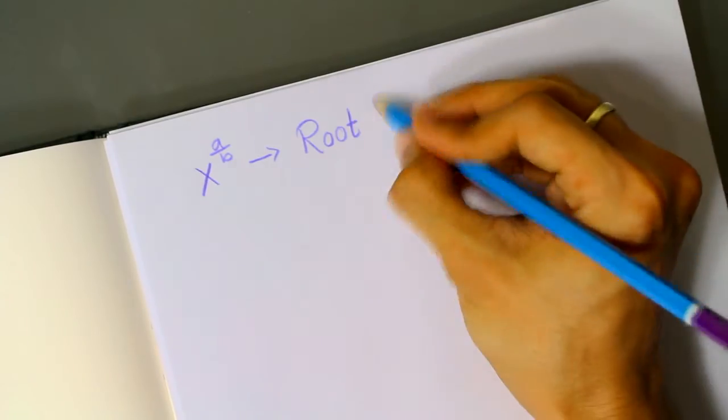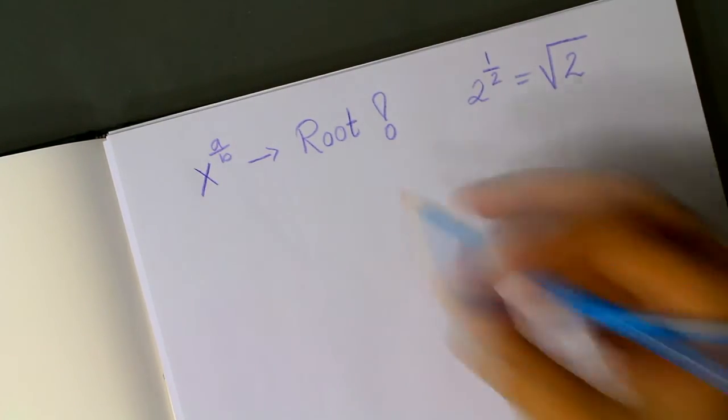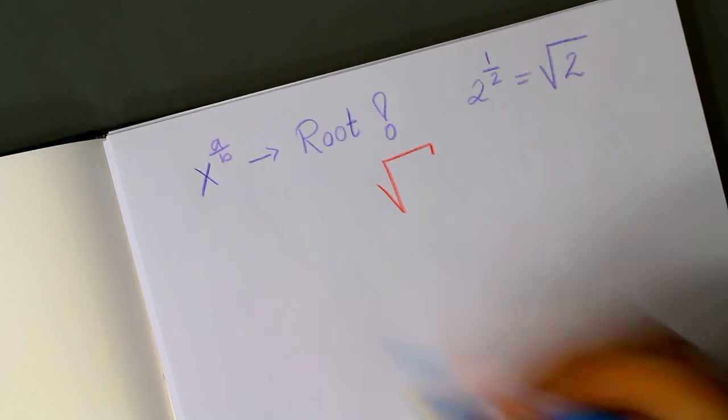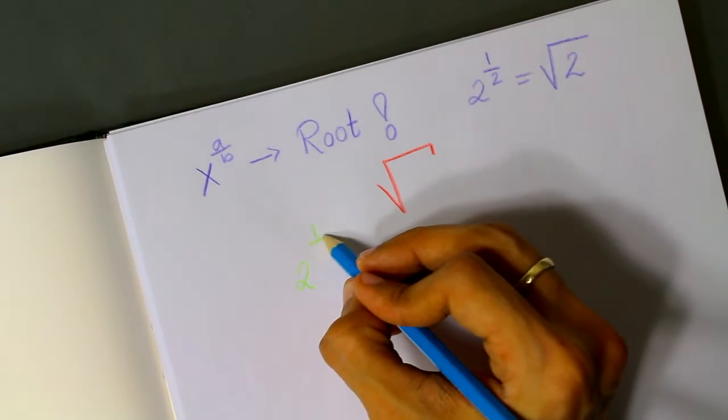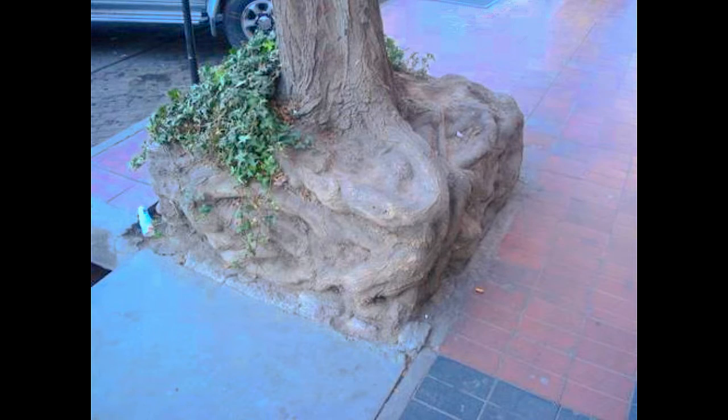For example, 2 to the power of one-half is what we usually call the square root of 2, and we write this symbol to represent it. 2 to the power of one-third would be a cube root, and we represent it like this. Just kidding, it's this.